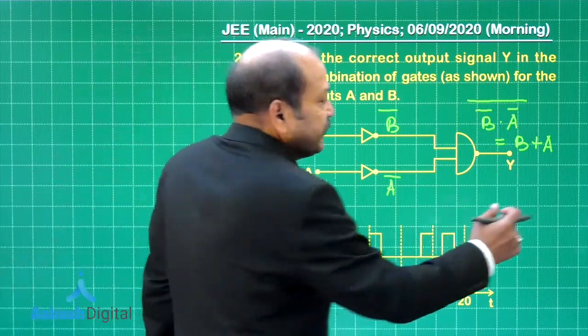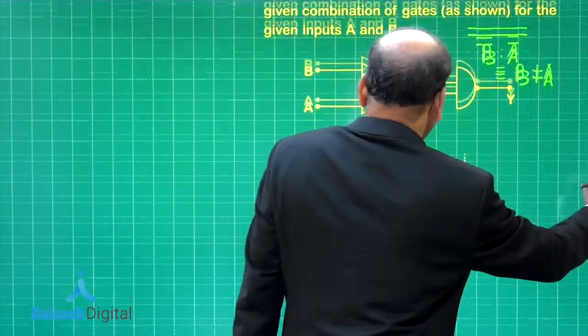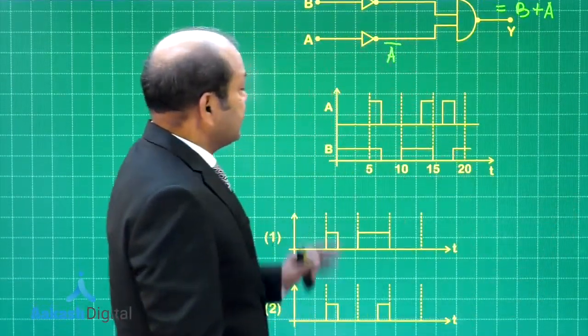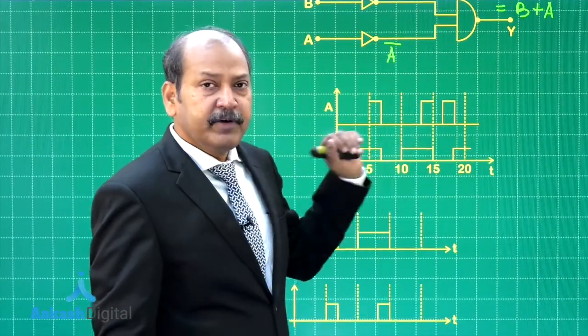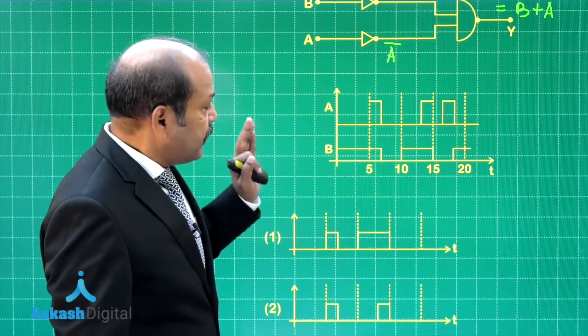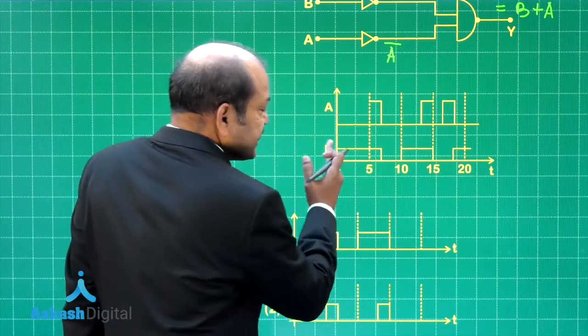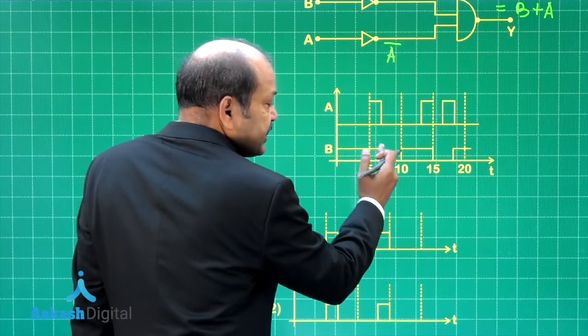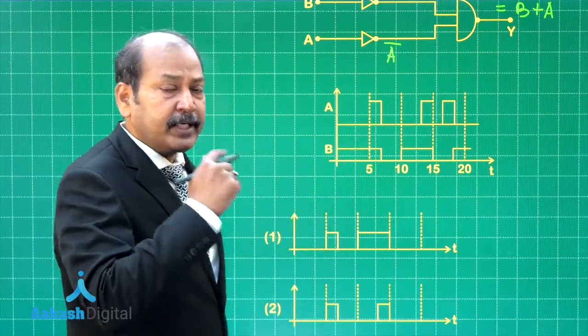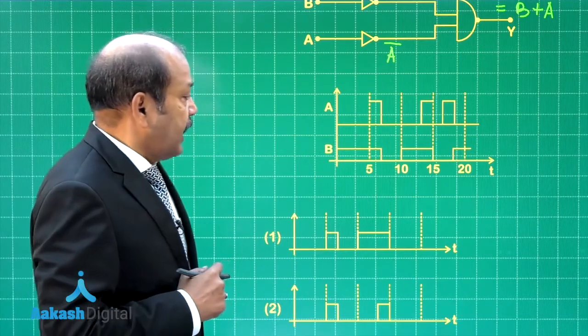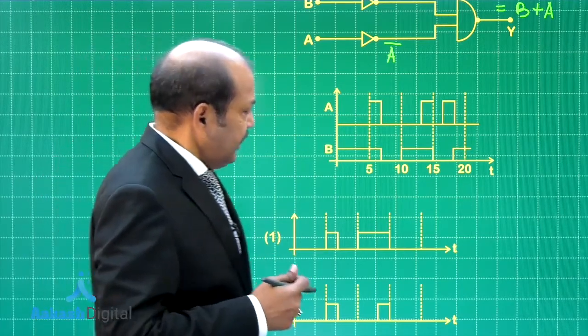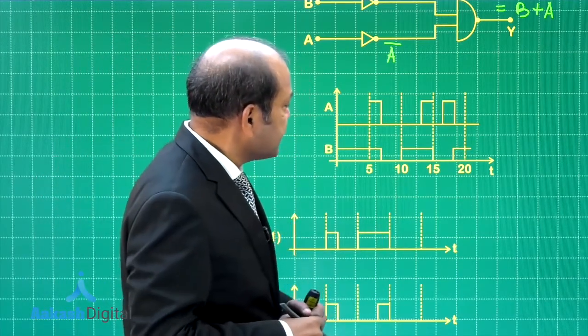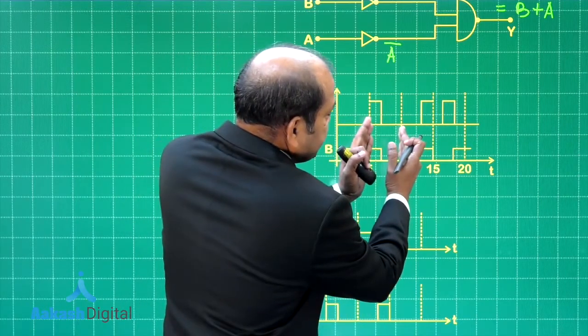So with that we can evaluate the output for the given input variation. This is how the input is varying with time. Now if you look at this since B is 1 till this instant, clearly till this instant the output should be 1 and similarly as we have just discussed output should be 0 for this particular interval.